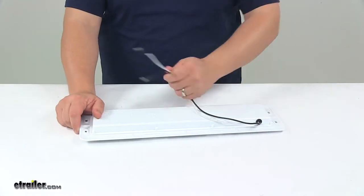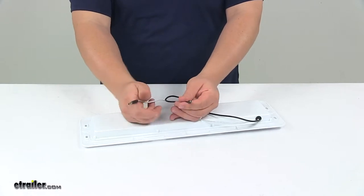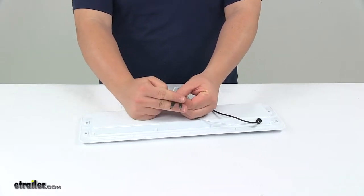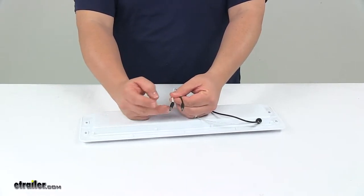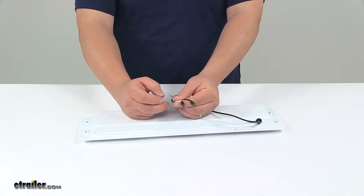It's a two-wire design, so you have your white wire, which is ground, and black wire, which is your power lead. On the ends of the wiring, we have the .180 male bullet connectors. If you don't want those on there, you can cut them off and strip back the wiring for hardwired applications.